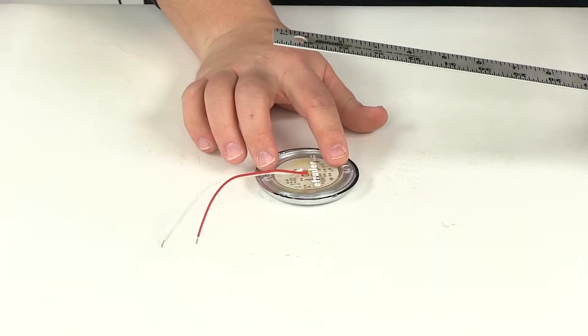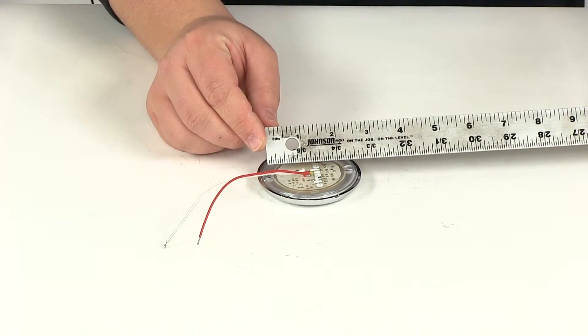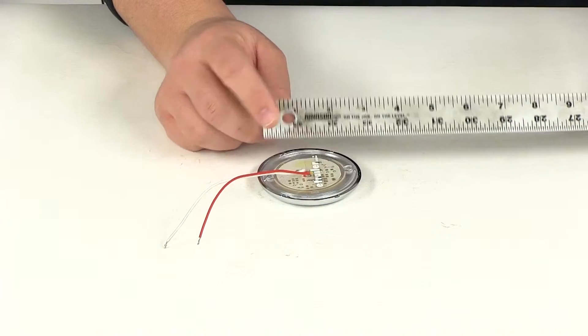Then you have the mounting holes back here. This is a surface mount design. Those mounting holes are separated center on center by two and one quarter of an inch.